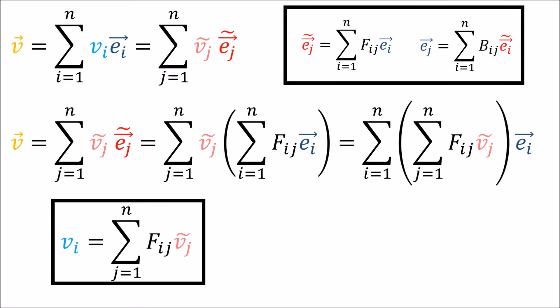And the same is true in the other direction. We can start with the new components and basis vectors, then replace the new basis vectors using the forward transformation. And that gives us a linear combination of old basis vectors. And again, this part in the middle has to be equal to the old coefficients. So we've shown here that when we go from the new components to the old components, we transform using the forward transformation.